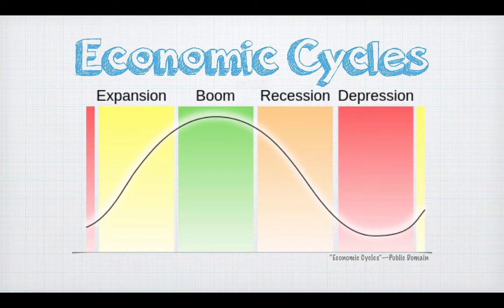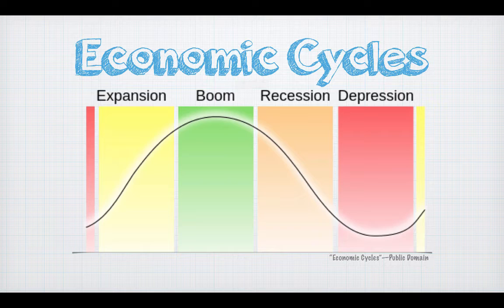This is what it looks like if we were to graph it out. As you can see, you start with the expansion in the beginning, we go into the boom, and once we hit that peak, we start a downward trend and end up in a depression. It reminds me a lot of a roller coaster, because as soon as you get out of the depression, you're going back up a hill again. As soon as you get out of that trough at the bottom, you're going to start to climb that hill again. It's really important that we always remember this is a cycle.